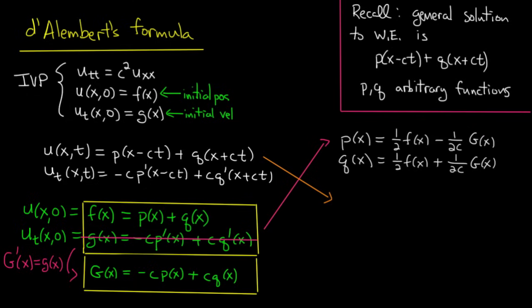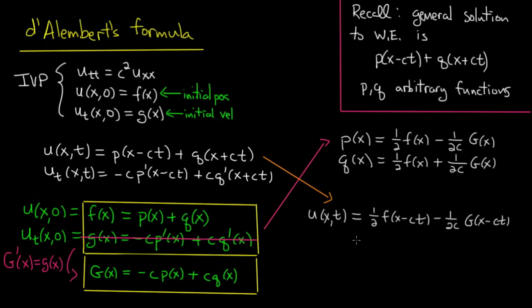We still need to figure out exactly what G is, but we've essentially solved our problem. The solution is u of x, t equals p of x minus ct plus q of x plus ct, which expands to one-half f of x minus ct minus one over 2c times G of x minus ct, plus one-half f of x plus ct plus one over 2c times G of x plus ct. Let's figure out what's going on with this G on the next slide to get the full d'Alembert formula.